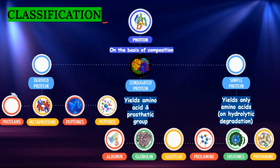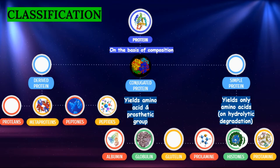Next, we have classification of proteins. Proteins are classified on the basis of composition into three parts. First is derived protein, second is conjugated protein, and third is simple protein. Derived proteins are proteoses, metaproteins, peptones, and peptides. Conjugated proteins contain amino acids and prosthetic groups like carbohydrates, lipids, nucleic acids, and phosphates. Simple proteins yield only amino acids on hydrolytic degradation. These are albumin, globulin, glutelins, prolamines, histones, and protamines respectively.